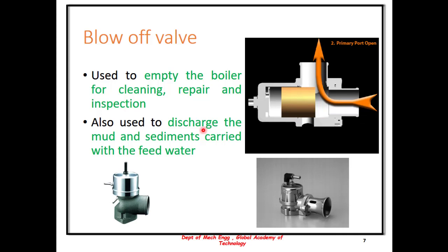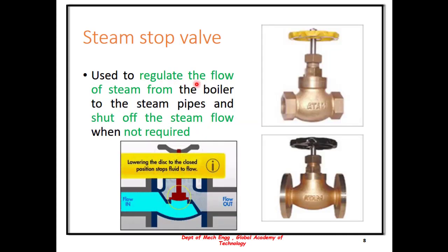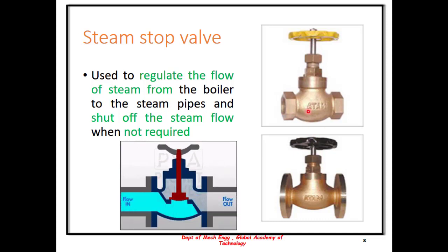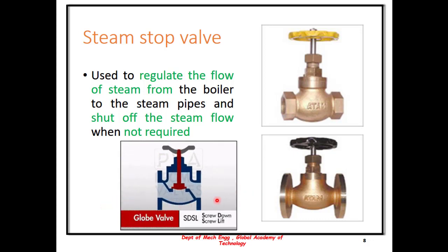The steam stop valve is basically used to regulate the flow of the steam from the boiler to the steam pipes. It looks something like this, a shut off valve typically used for water flows in household applications. The working is similar to this. When the pin is released upwards, the flow is made continuous and the steam flows into the pipes from the boiler.